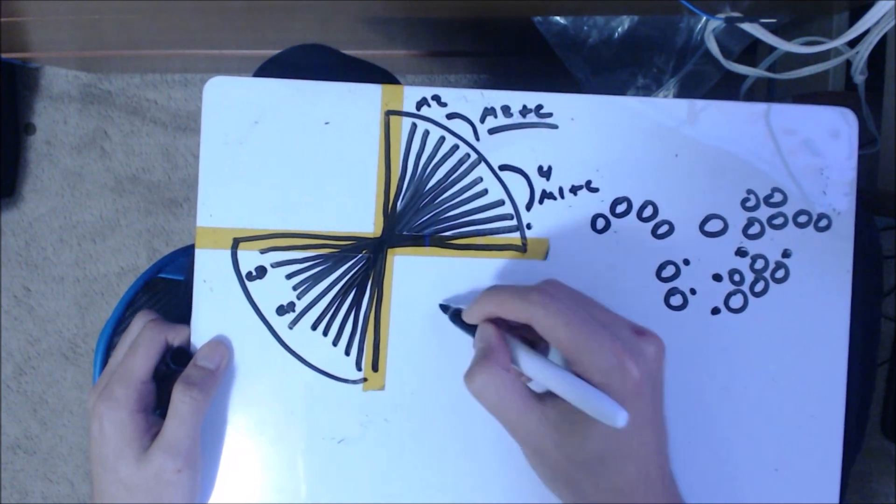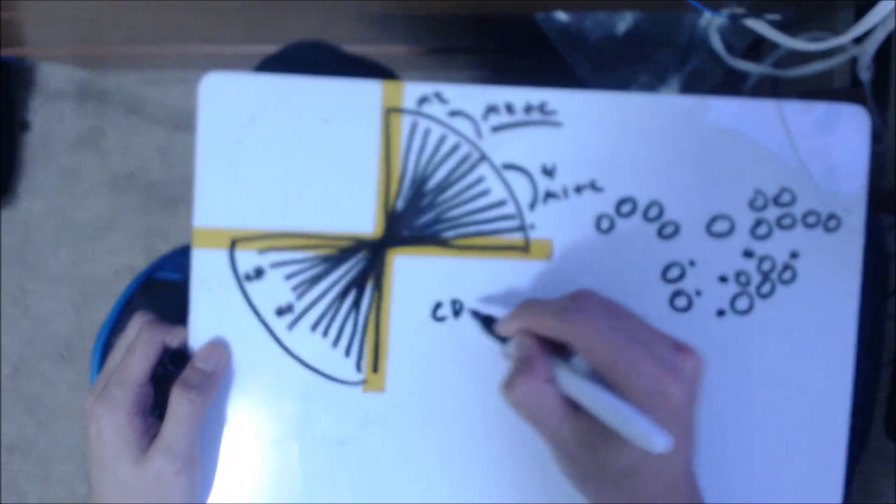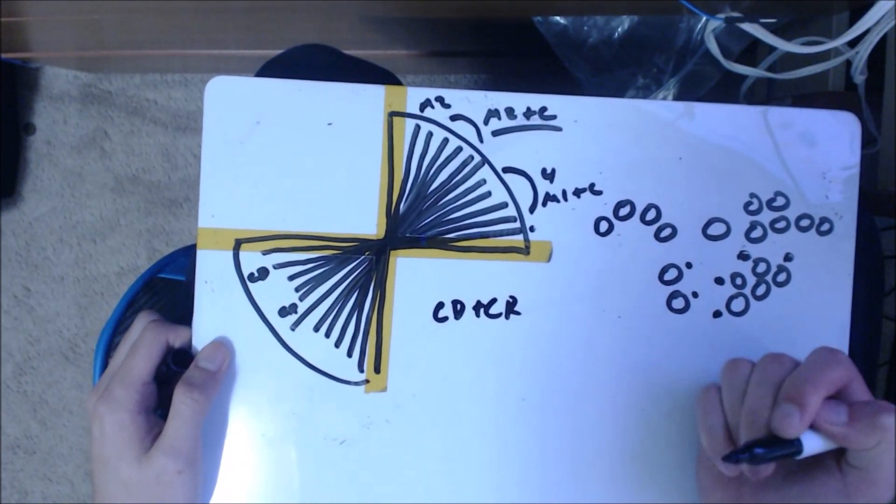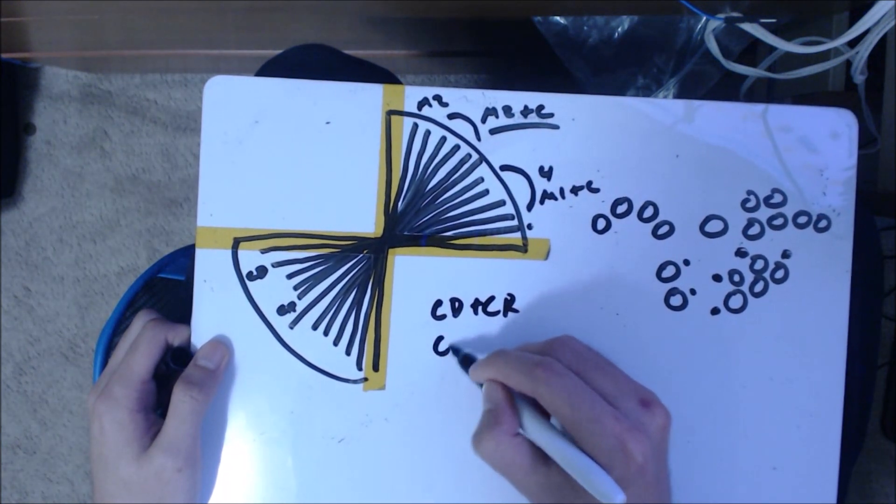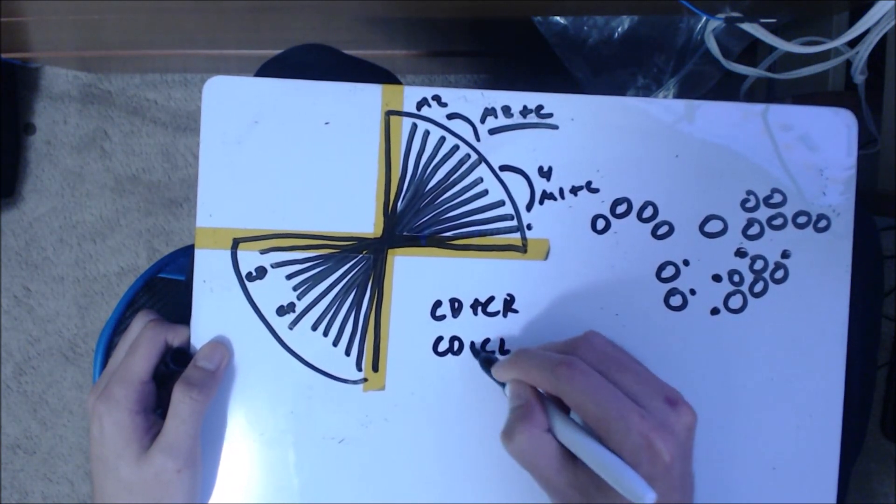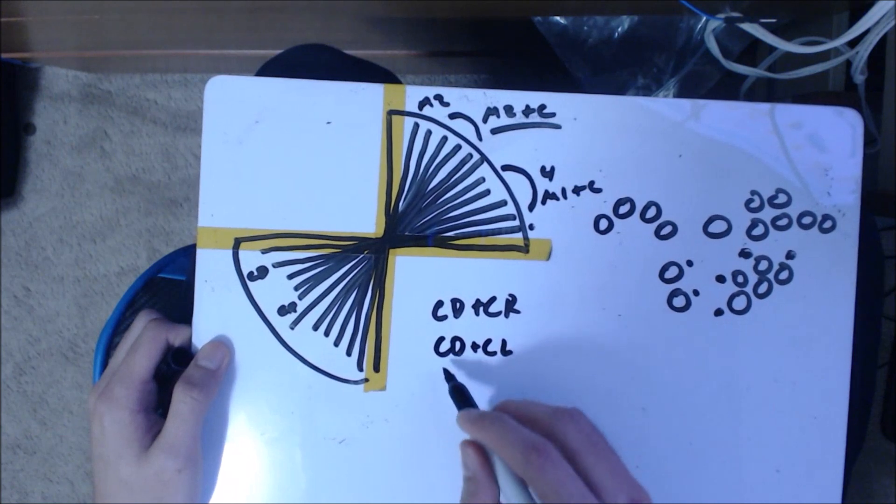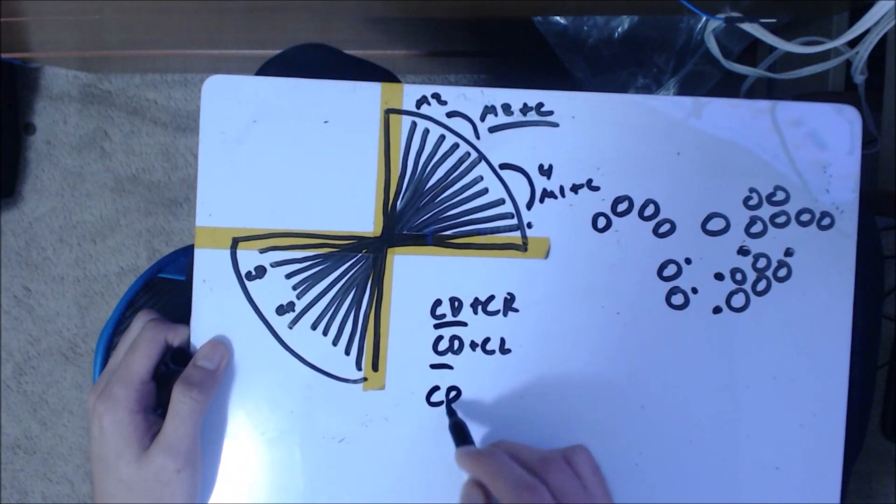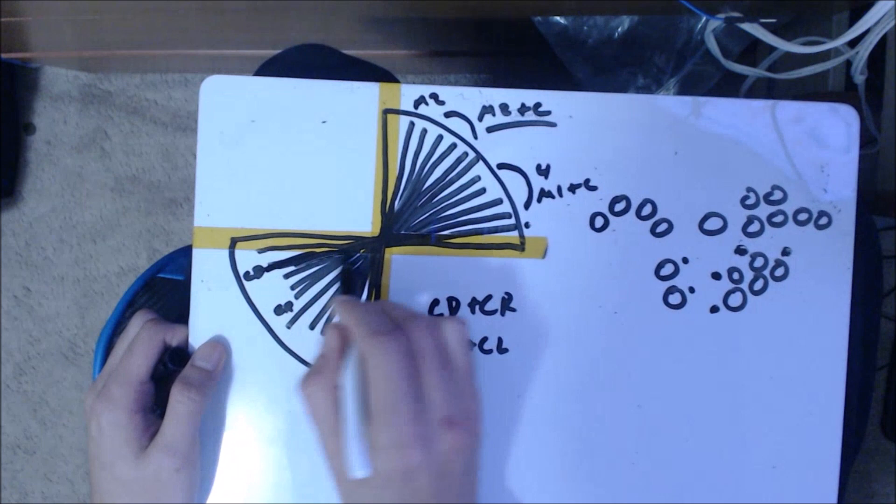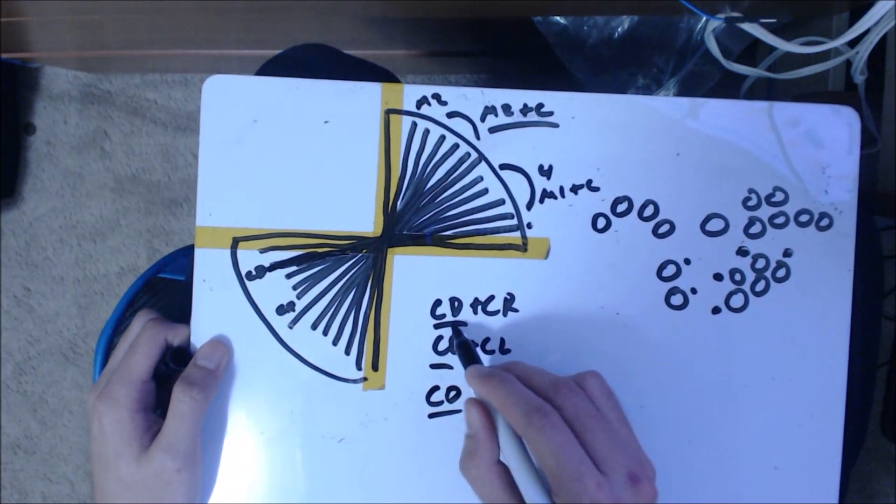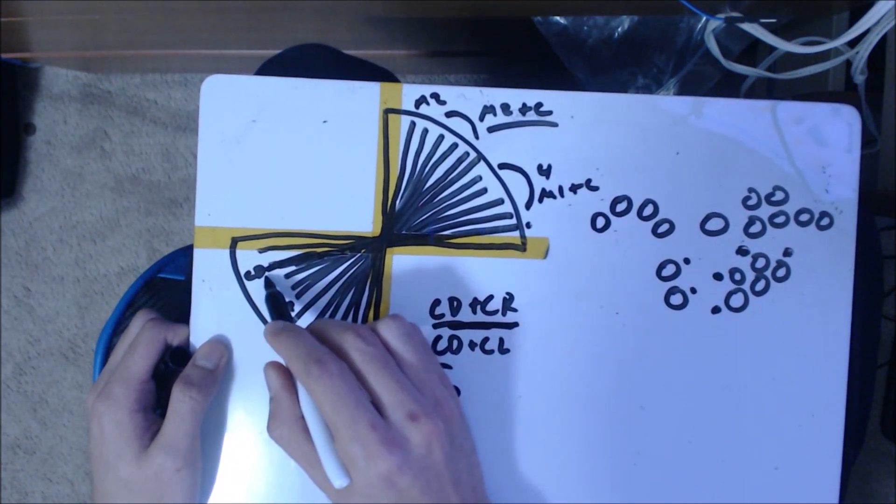Now you might be wondering, what if I hold C-down and C-right together? Well nothing really happens. Same for C-down and C-left, nothing happens. You just get C-down, that's it. Holding two angles together doesn't get you an in-between or anything like that.